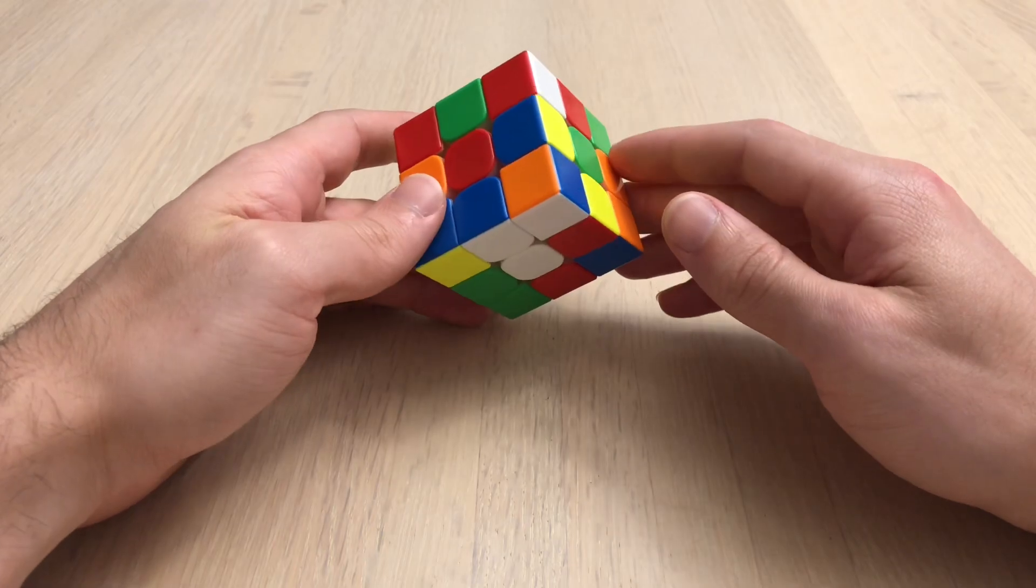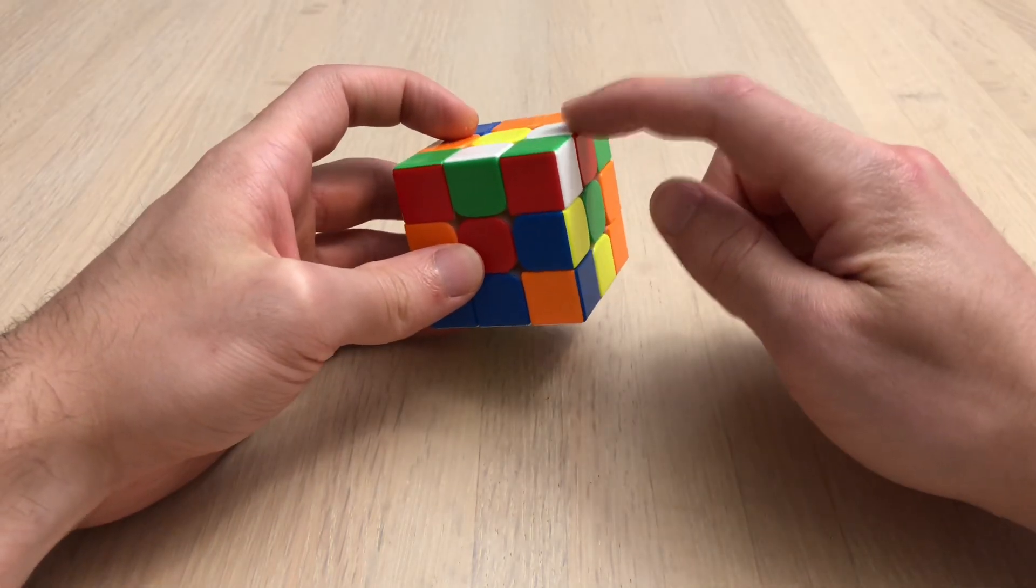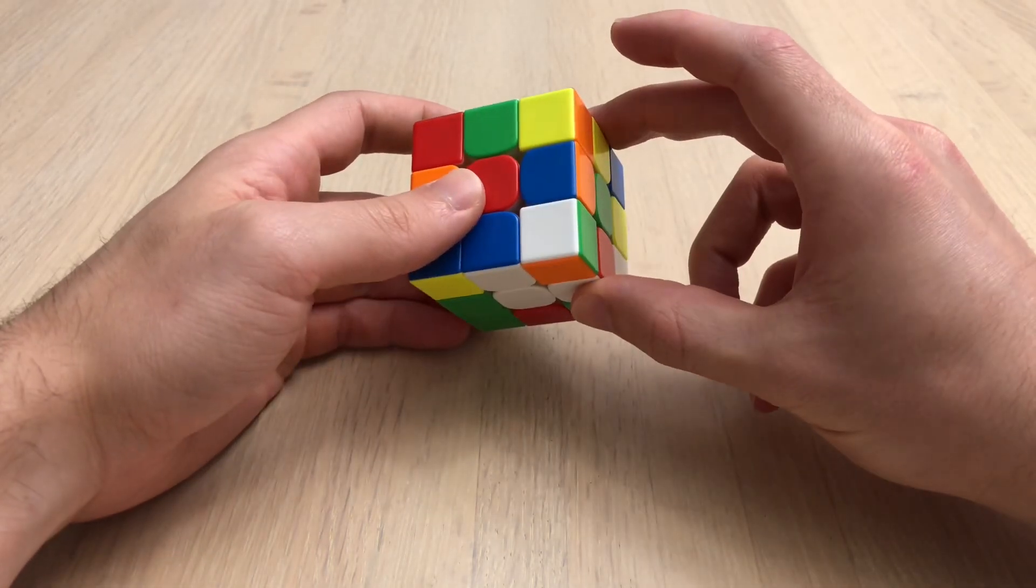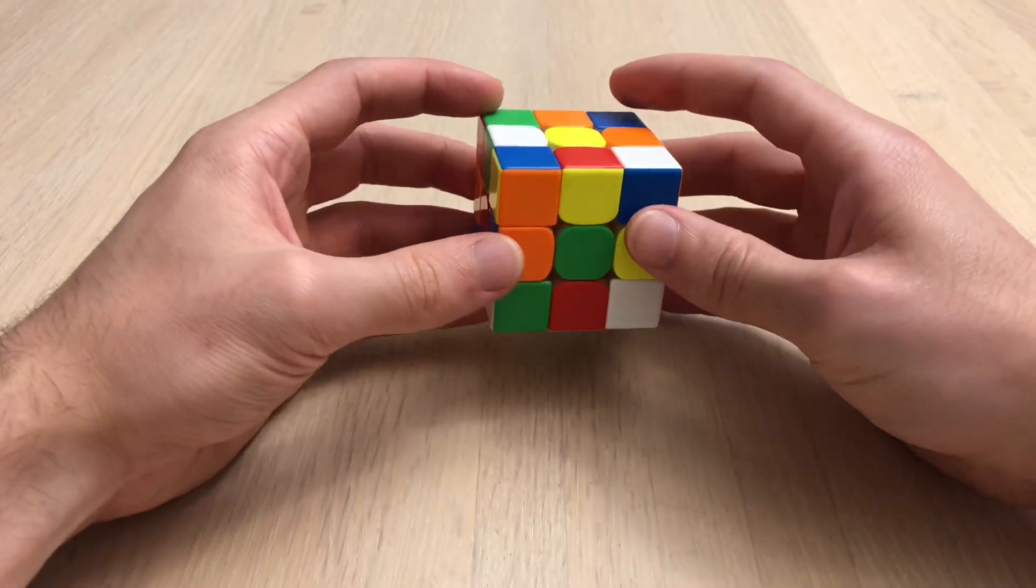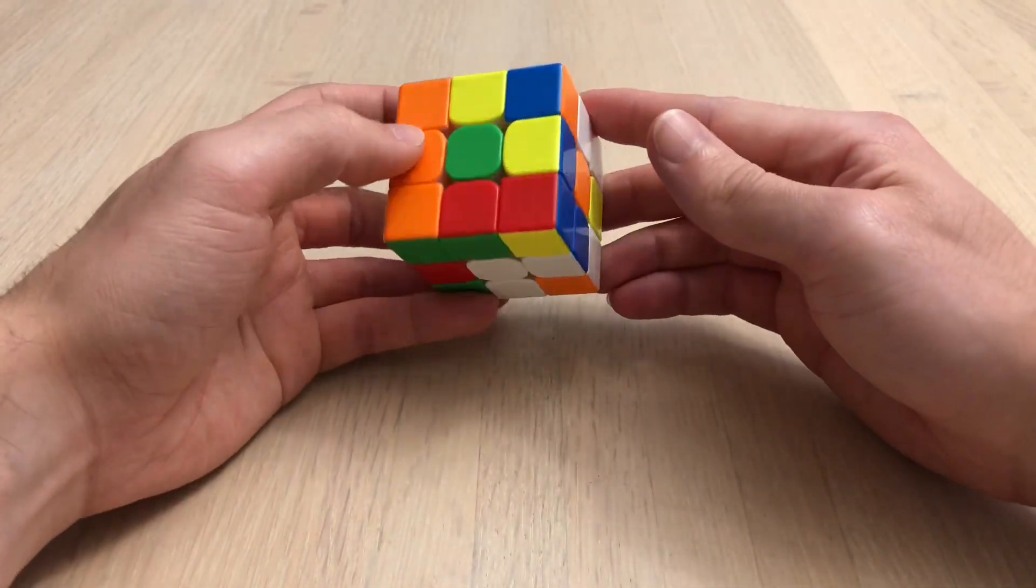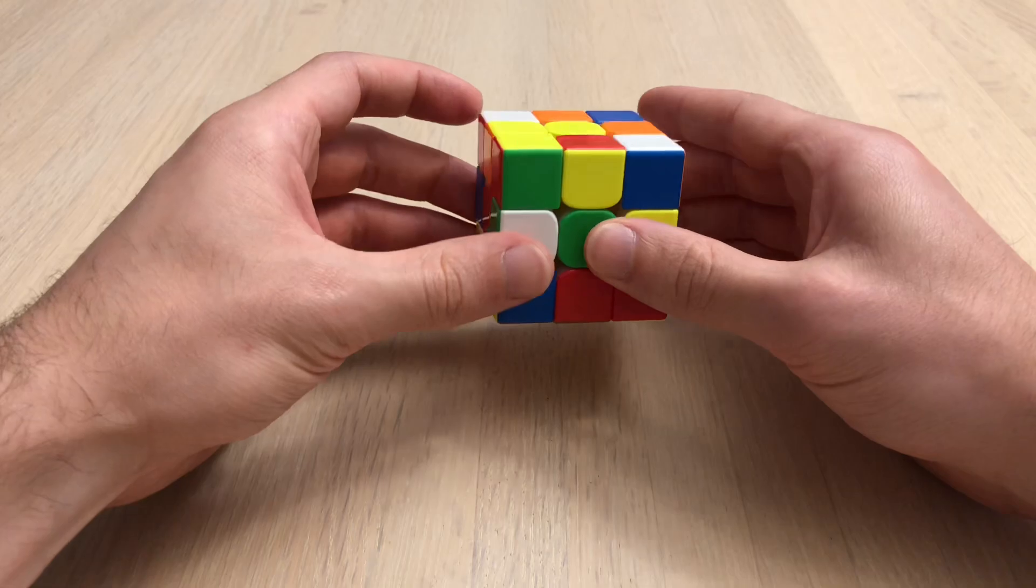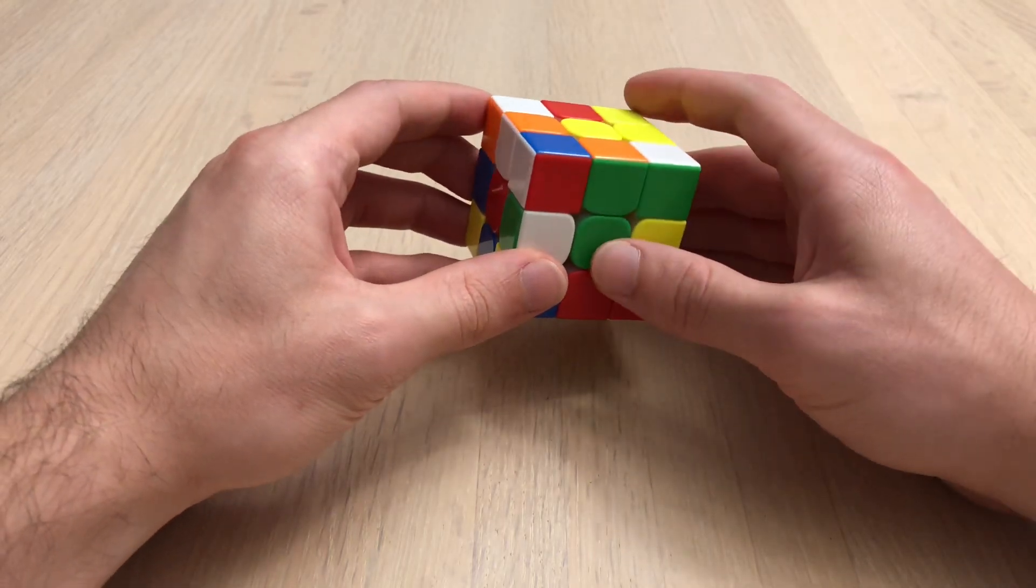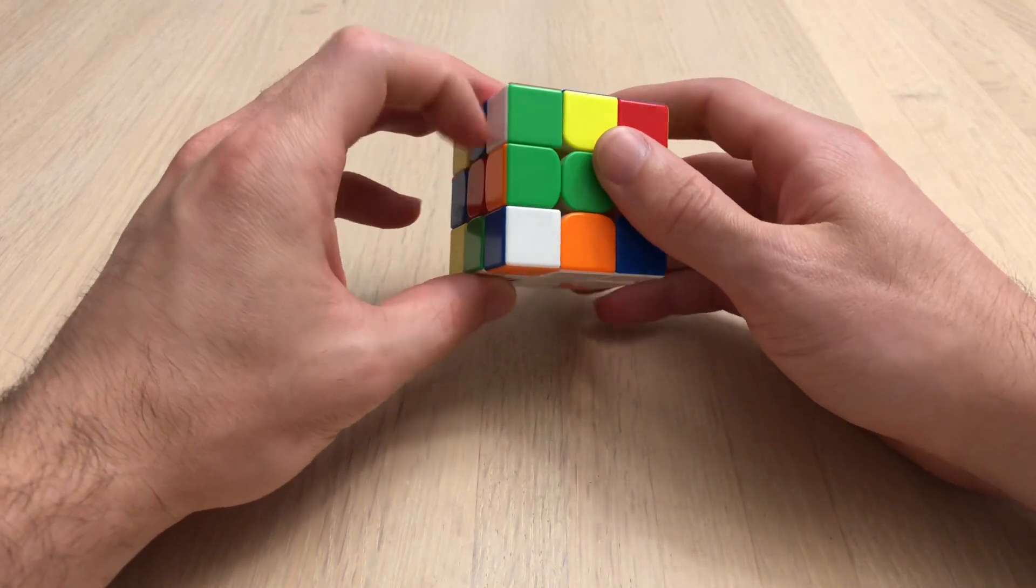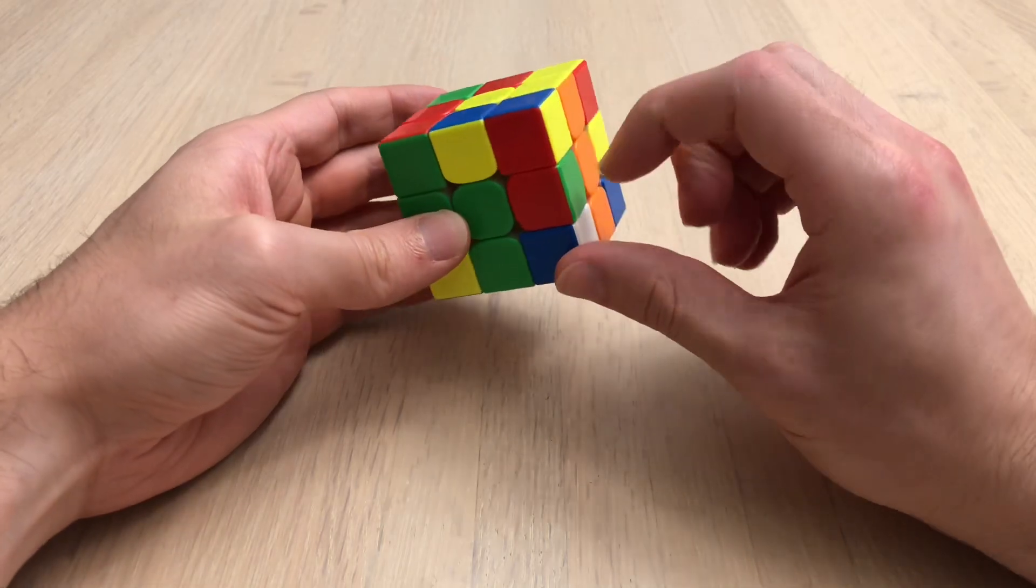Ninth scramble. I'm going to bring this white red down, rotate, D2, bring this green down, and solve the orange as I'm solving the green. Like that. And then I see this pair.